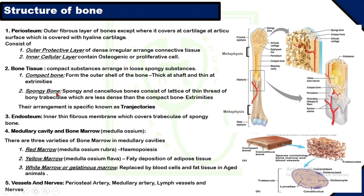Spongy bone is a cancellous bone consisting of a network of thin threads of bony trabeculae, which are less dense than compact bone. Spongy bone is found at the extremities of the bone, and their arrangements are specific, known as trajectories. As seen in the picture, compact bone is thick at the diaphysis or shaft, and spongy bone is found at the extremities. Compact bone is rigid and hard in nature, whereas spongy bone acts as a sponge with trabeculae and trajectories.